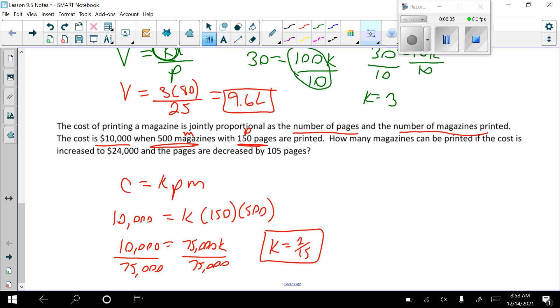So let's look at the rest of the problem here. So we have, let's see, how many magazines can be printed? So we're looking for this guy. So we know that our K now is 2 over 15. And so let's see what we have for C and what we have for P. The cost is 24,000. And the pages are decreased by 105 pages. So we had 150, and now we decrease that by 105. So 150 minus 105, that's 45. So I have K, 2 over 15 times 45 times M.